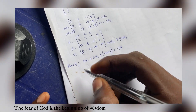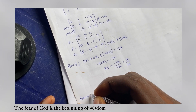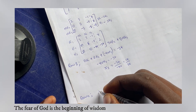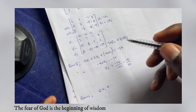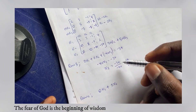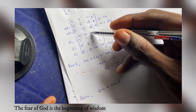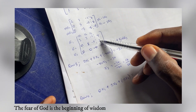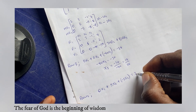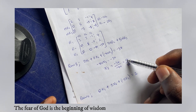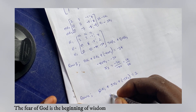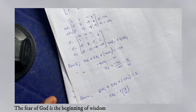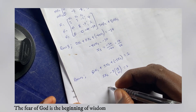Now let's get x₂. From row 2: 0×x₁ + 5×x₂ - 5×x₃ = 2. We substitute x₃ = 17/20, giving 5x₂ - 5×(17/20) = 2, which simplifies to 5x₂ - 17/4 = 2.